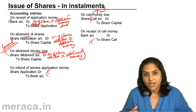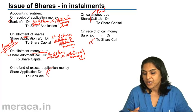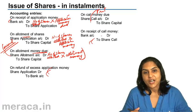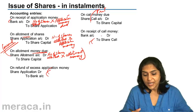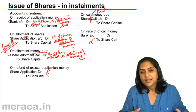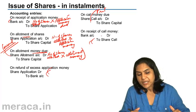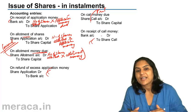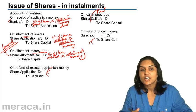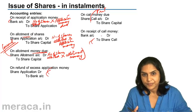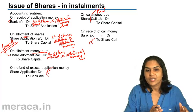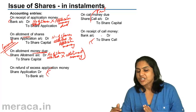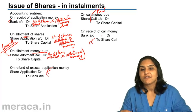From the second installment onwards, the moment money is due, the share allotment account or the share call account is debited and share capital credited. On receipt of money, bank account is debited to the respective installment account — whether share allotment or share call account. In this way the share allotment account and share call accounts get closed, leaving only bank on one side and share capital finally.